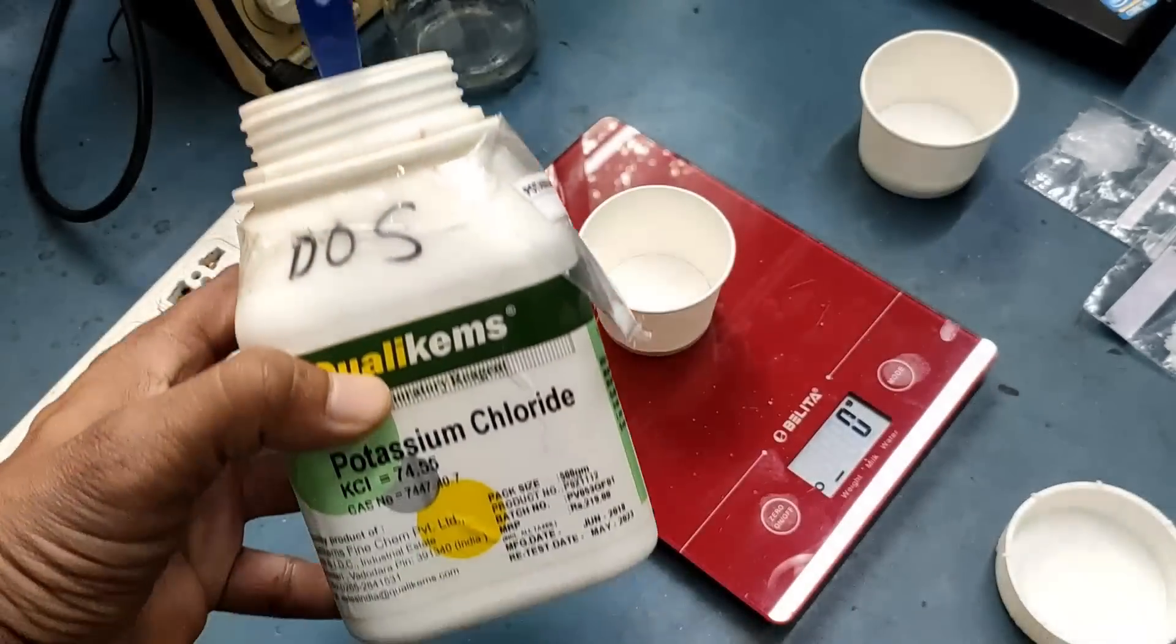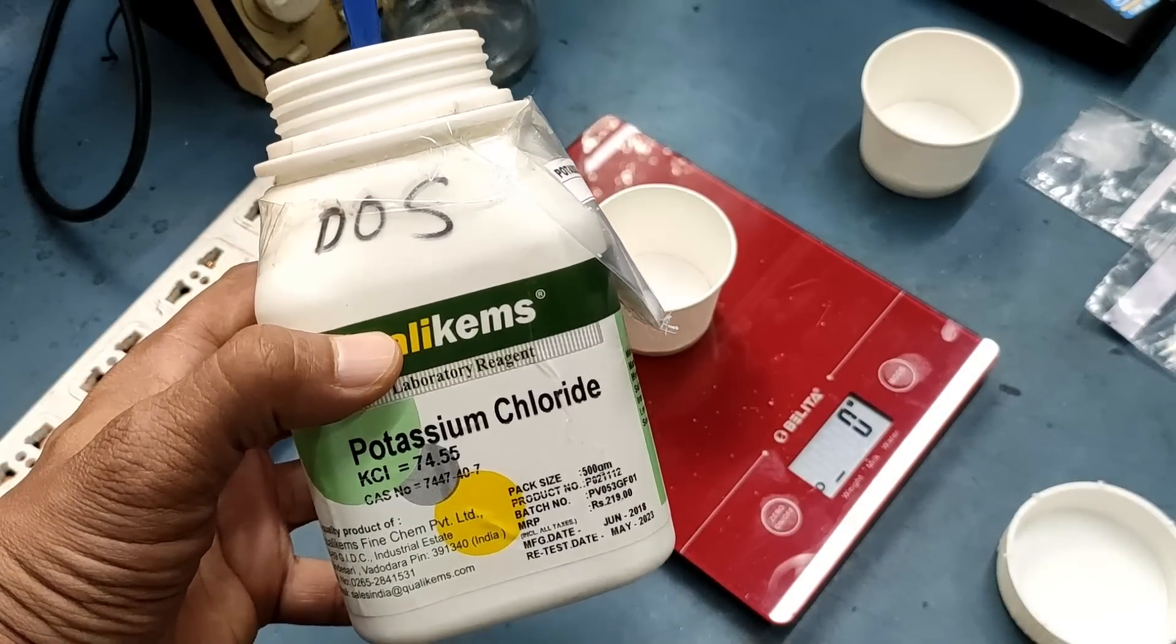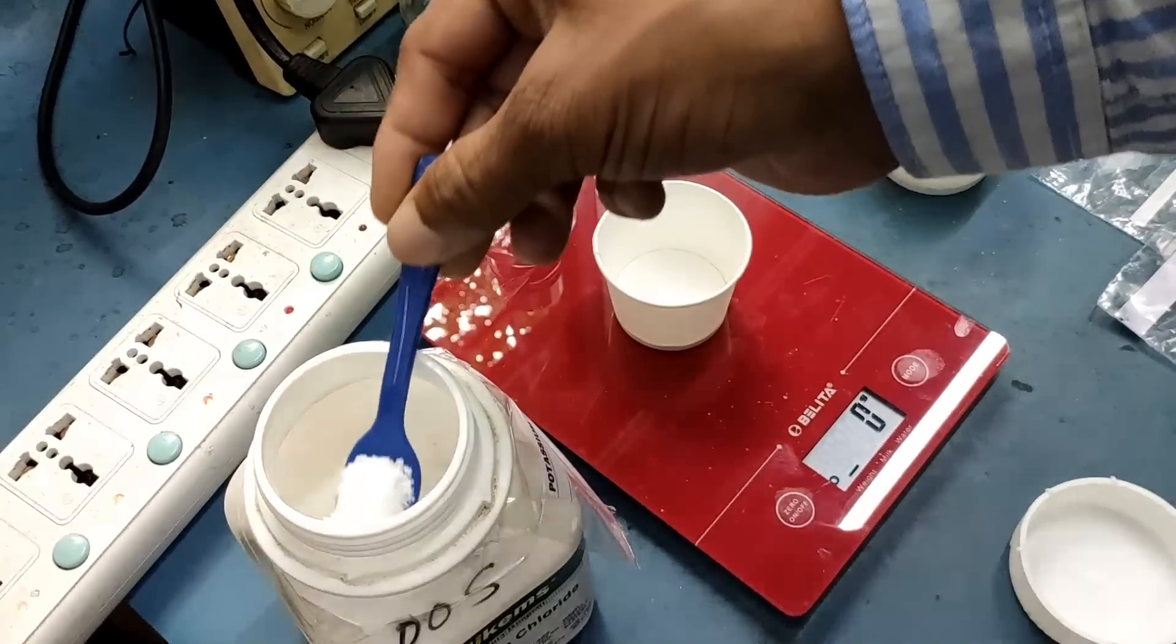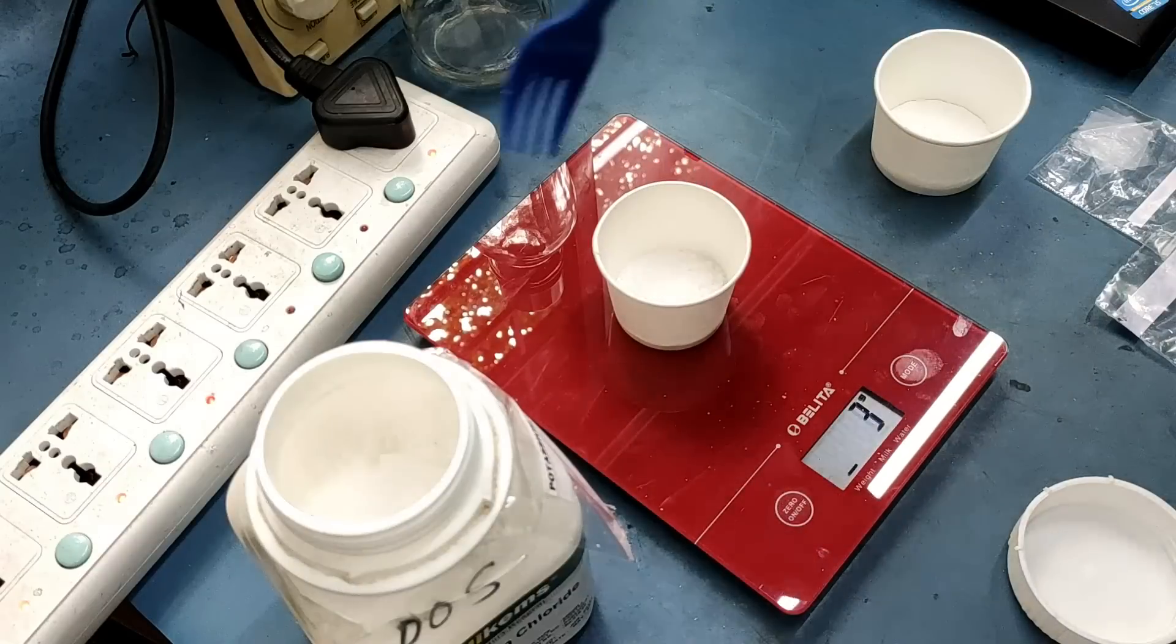Before getting the dissolved oxygen sensor probe to work, we need to prepare the probe by dissolving the KCL crystals of approximately 2 grams with 26 grams of water.